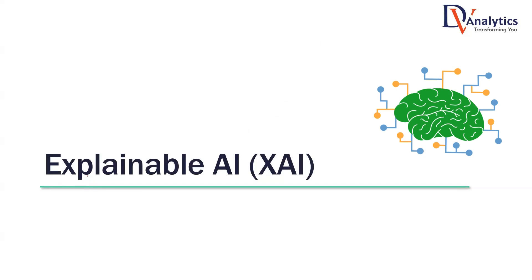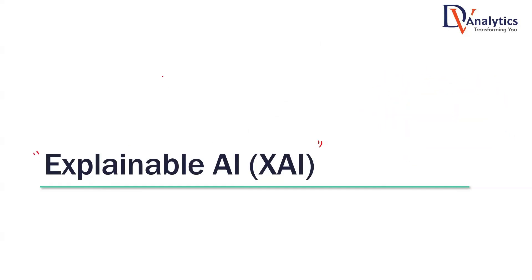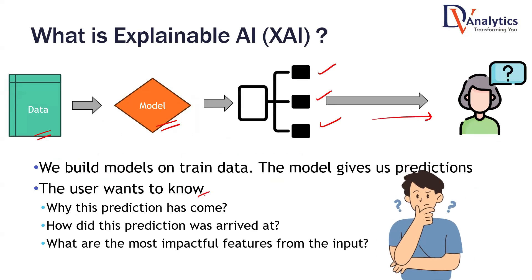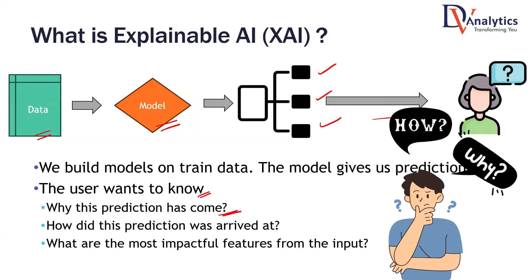In every scenario, Explainable AI is a topic or concept that tries to address this particular issue, especially when you are building black box models. Until now, the process is: you have the data, you build the model — let this be a black box model like an artificial neural network, boosting, random forest, or CNN. You take the data, you build the model, the model gives the predicted value, and you give that result to the user. But the user may want to know why and how this prediction came about — how did this prediction arrive?